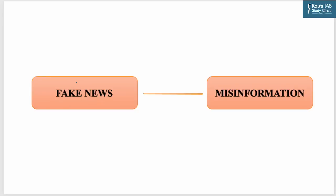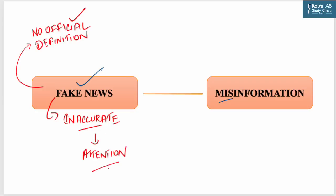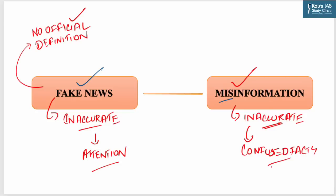Let us understand what fake news is and how it differs from misinformation. Though there is no official definition of fake news, it can be defined on the basis of its occurrence and repercussions. Fake news is an inaccurate, sometimes sensationalistic report created to gain attention, mislead, deceive or damage a reputation. Unlike misinformation — which is inaccurate because a reporter has confused facts — fake news is created with the intent to manipulate, and it can spread quickly when it aligns with the audience's point of view.